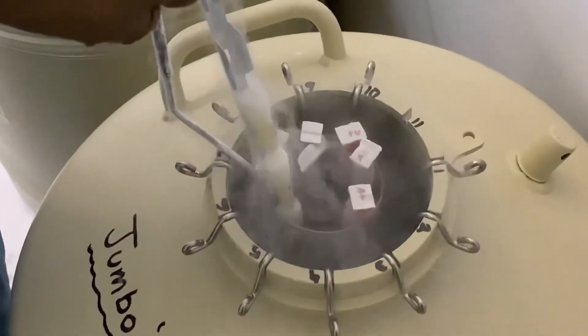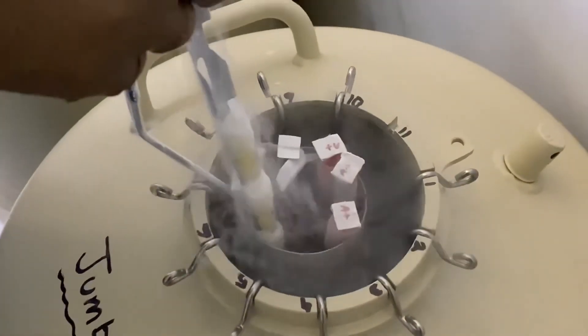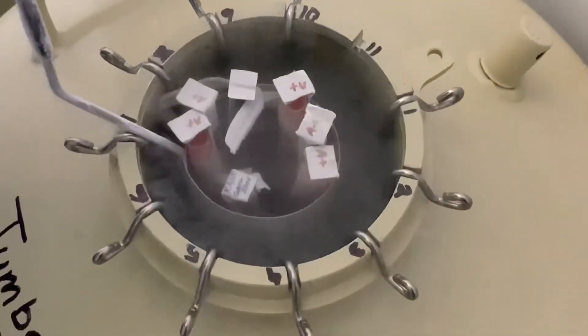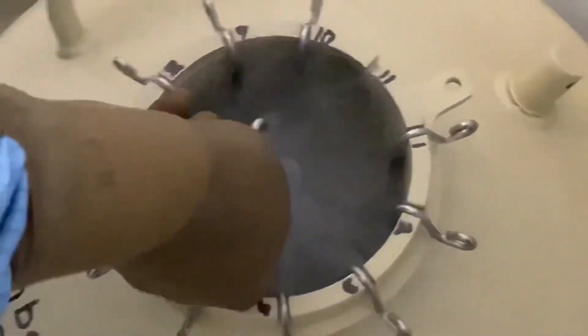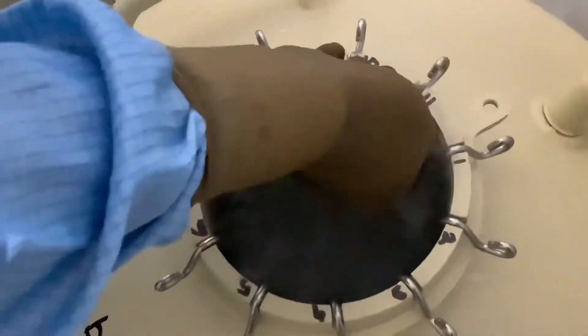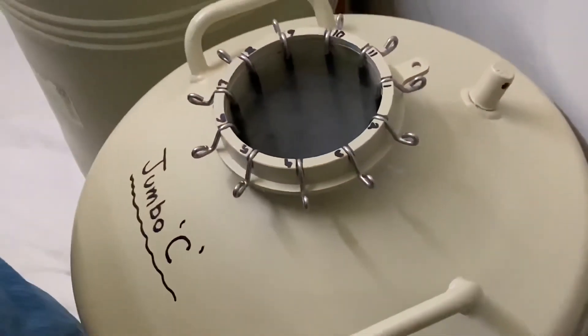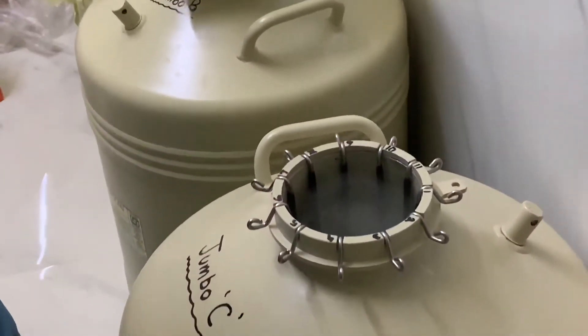Now the semen is properly frozen in liquid nitrogen temperature vapor at minus 80 and it will be plunged now inside the liquid nitrogen. And we will be keeping for years if needed this particular semen inside the liquid nitrogen at minus 196 degrees centigrade. This is a cryo can which we can see here in the cryo lab.